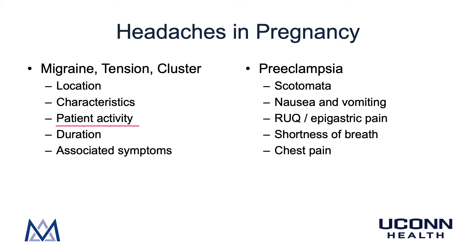Patients with a migraine headache prefer usually to be in a dark, quiet room. Patients with tension-type headache may either be resting or active, and patients with cluster headaches are usually active. Migraine headaches last 4 to 72 hours, whereas tension-type headaches last 30 minutes to many days, and cluster headaches last 15 minutes to 3 hours. Patients with migraines may have nausea, vomiting, and photophobia, whereas there are really no other associated symptoms with tension-type headache. Patients with cluster headaches may have increased lacrimation, redness of the eye, stuffy nose, and other nasal symptoms.